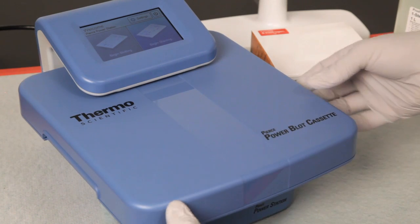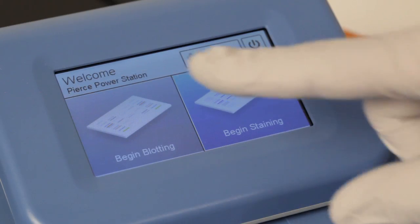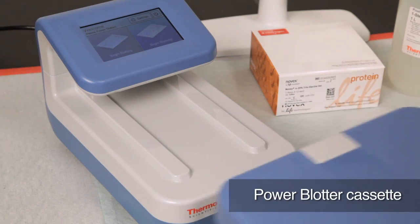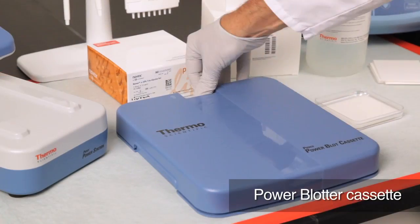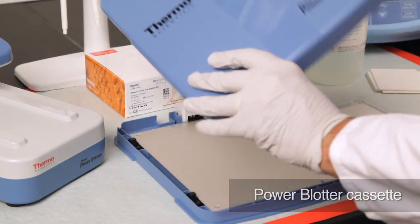The blotter consists of a stand-alone control unit with a color LCD touchscreen and a removable cassette that houses the platinum-coated titanium anode and the stainless steel cathode.